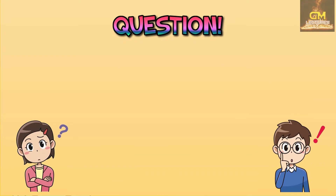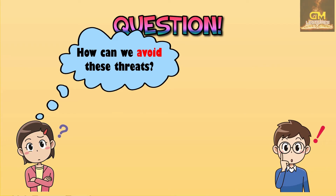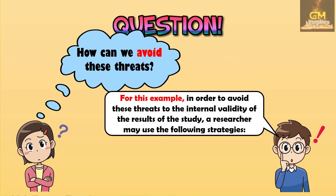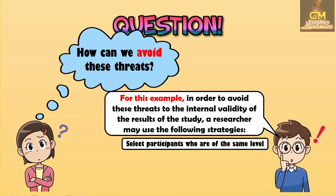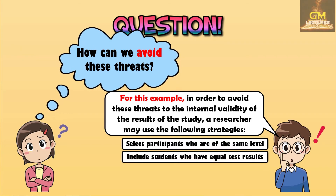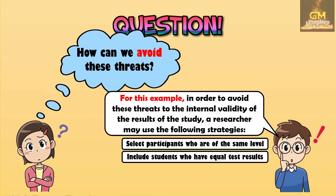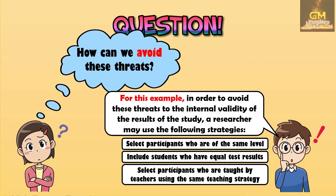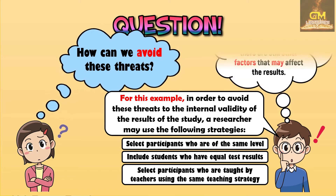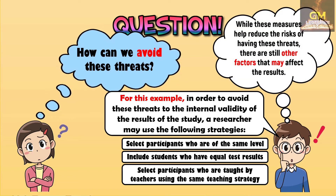With this in mind, let's answer another question: How can we avoid these threats? In order to avoid these threats to the internal validity of the results of the study, a researcher may use the following strategies: one is to select participants who are of the same level; next is to include students who have equal test results; and lastly is to select participants who are taught by teachers using the same teaching strategy. Take note that while these measures help reduce the risks of having these threats, there are still other factors that may affect the results.